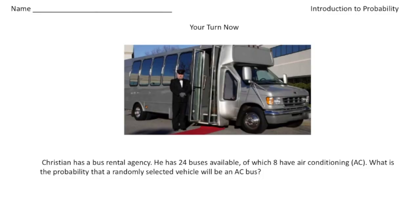Welcome back. Let's see how I do this practice problem. So the problem says Christian has a bus rental agency, and he has 24 buses available, of which 8 have air conditioning. So what is the probability that a randomly selected vehicle will be an AC bus?